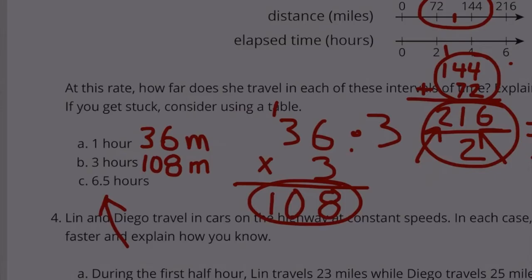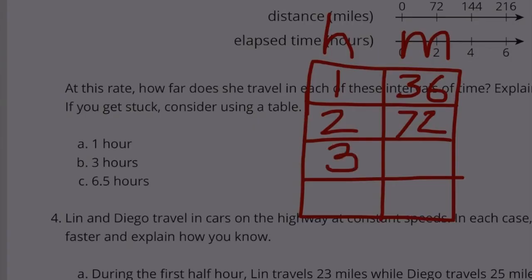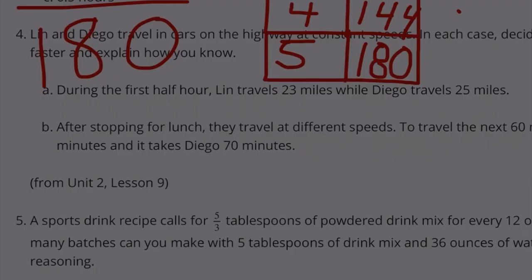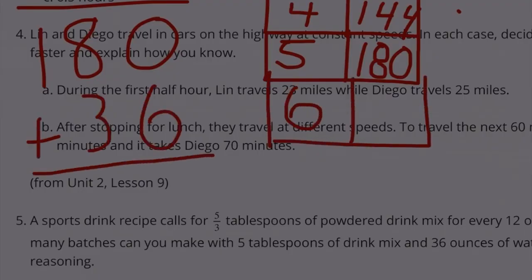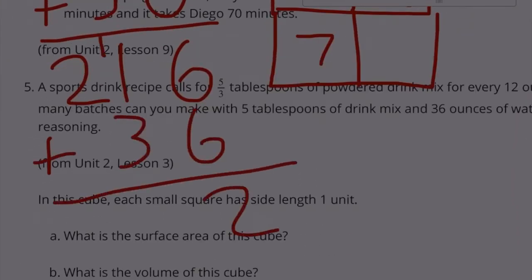Part C: 6.5 hours. Let's make a chart. Hours, miles. 2 hours, 72 miles. 1 hour, 36 miles. So basically we're going by 36: 36, 72, 108, 144, 144 plus 36... 5 to 180, 6 to 216, 7 to 252.